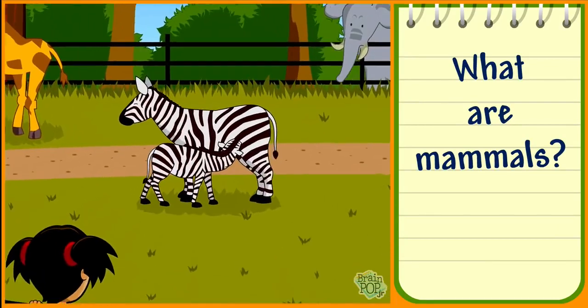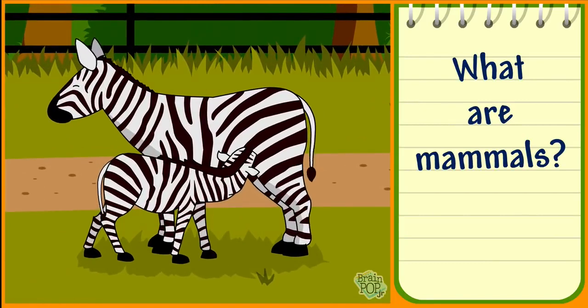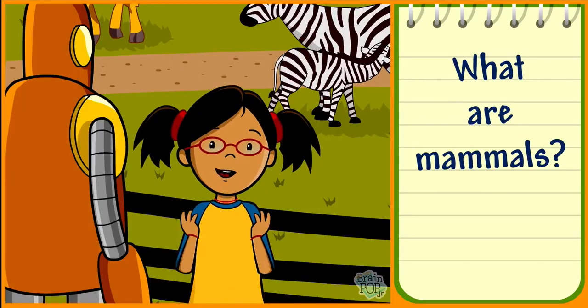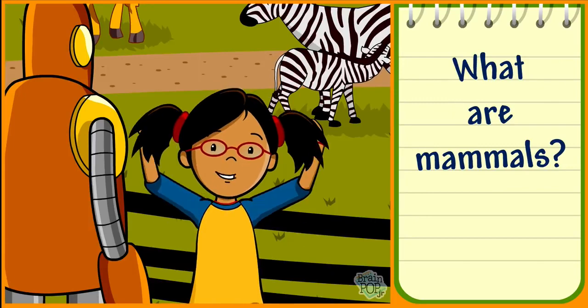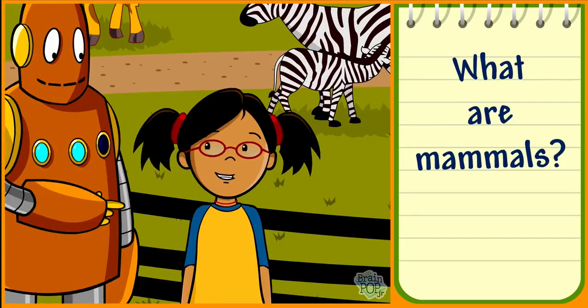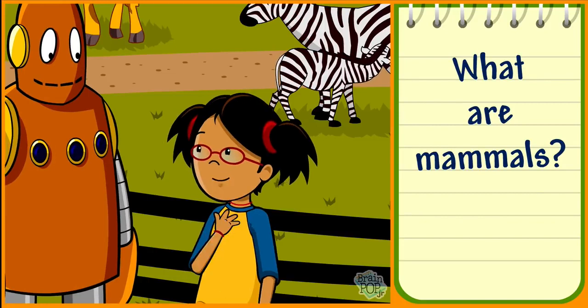Mammals are vertebrates that get milk from their mothers when they are very young. They breathe air with lungs and have hair or fur. Right, Moby. People are mammals.